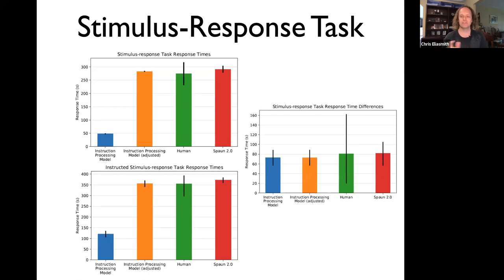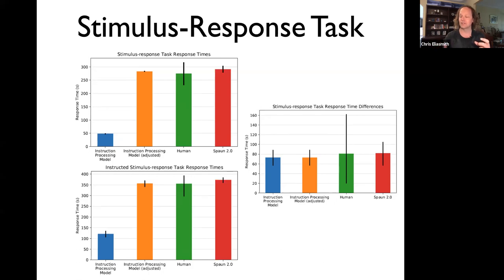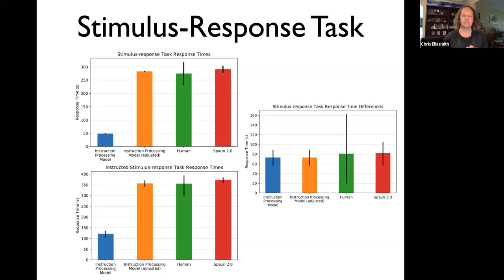We also compared just the difference between these two conditions — subtracting the simple task from the instructed task — and the differences are very consistent across all models. This speaks to a natural explanation: what's happening in the human case is not that you're being told more complicated things or your auditory system takes longer, but really that when the task is performed there are more steps, and those more steps take a longer period of time.